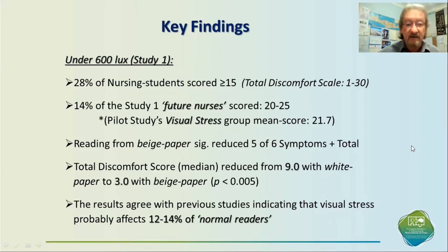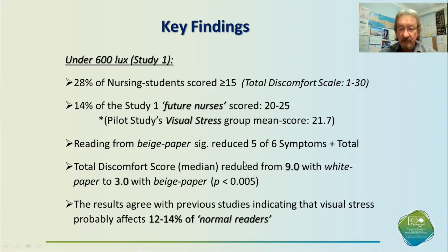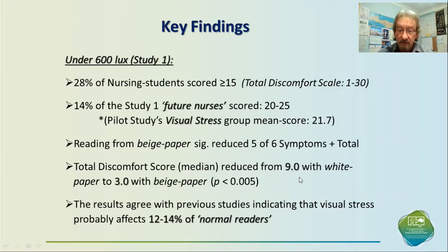This suggests that these people almost definitely have visual stress but have not been diagnosed. Five of the six symptoms reduced when viewing the beige-coloured paper, plus the total score. The total score reduced from nine with the white paper to three with the beige paper, which was highly significant.